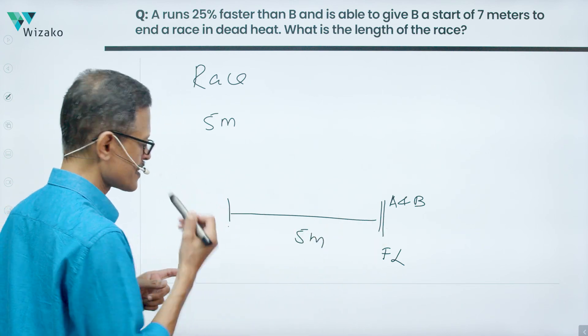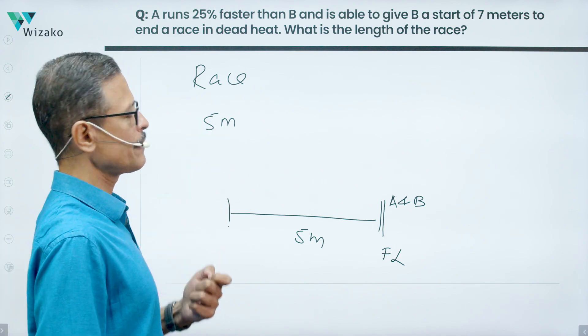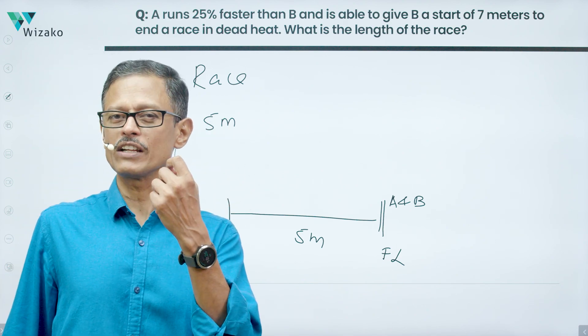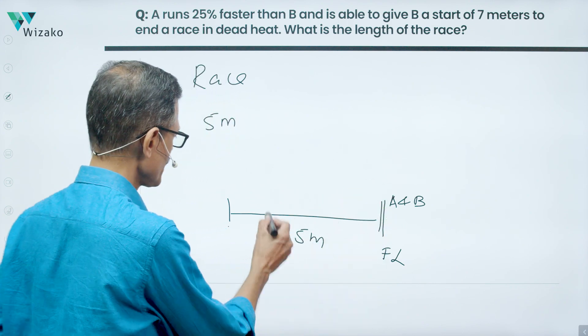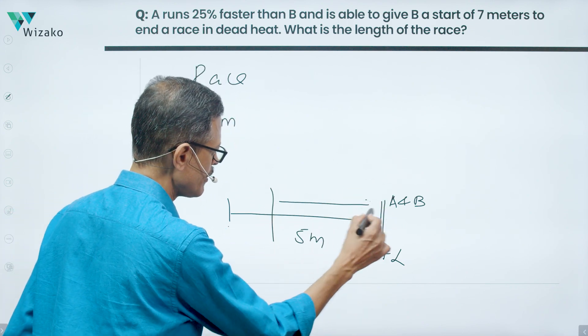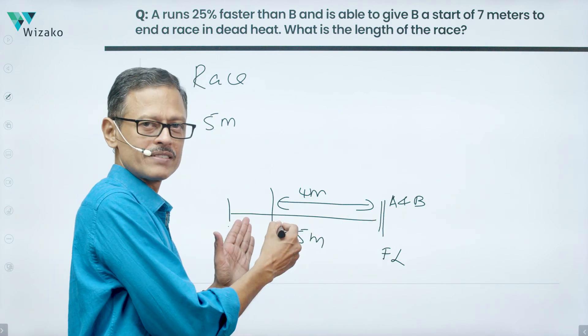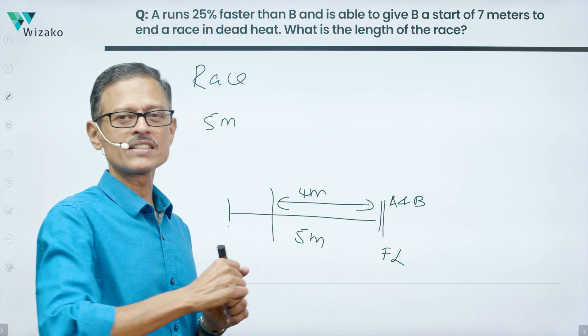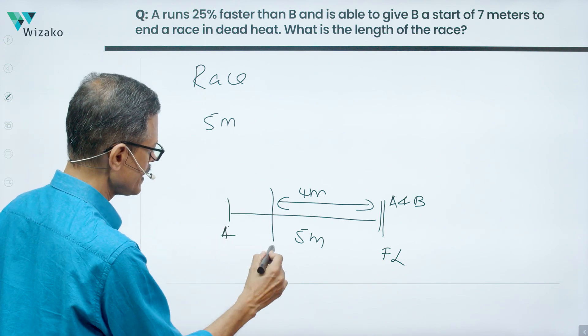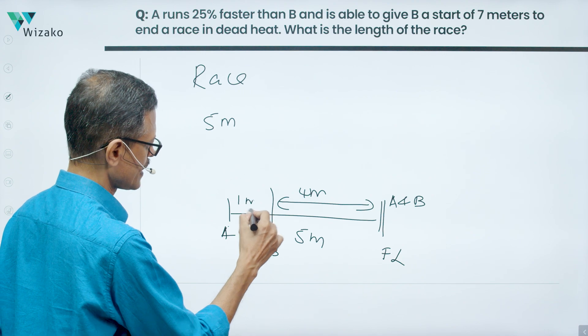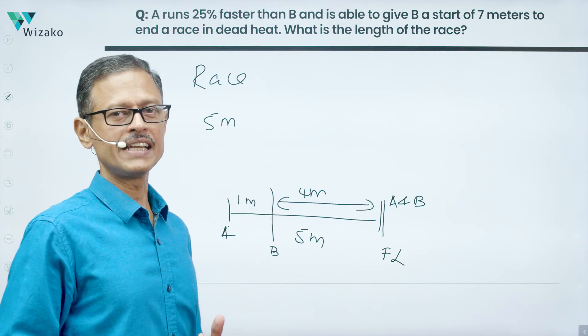Length of the race is 5 meters, so A can start at the starting point and run this full 5 meters. When A runs 5 meters, we know that B manages to run only 4 meters, which means that if they had to finish at the same time, we should allow B to run only 4 meters in this race so that they start from different places. B runs 4 meters, at the same time A runs 5 meters, they finish together. So how much start should A give B? A should allow B to start 1 meter ahead of the starting line. This is the start that A will give B.